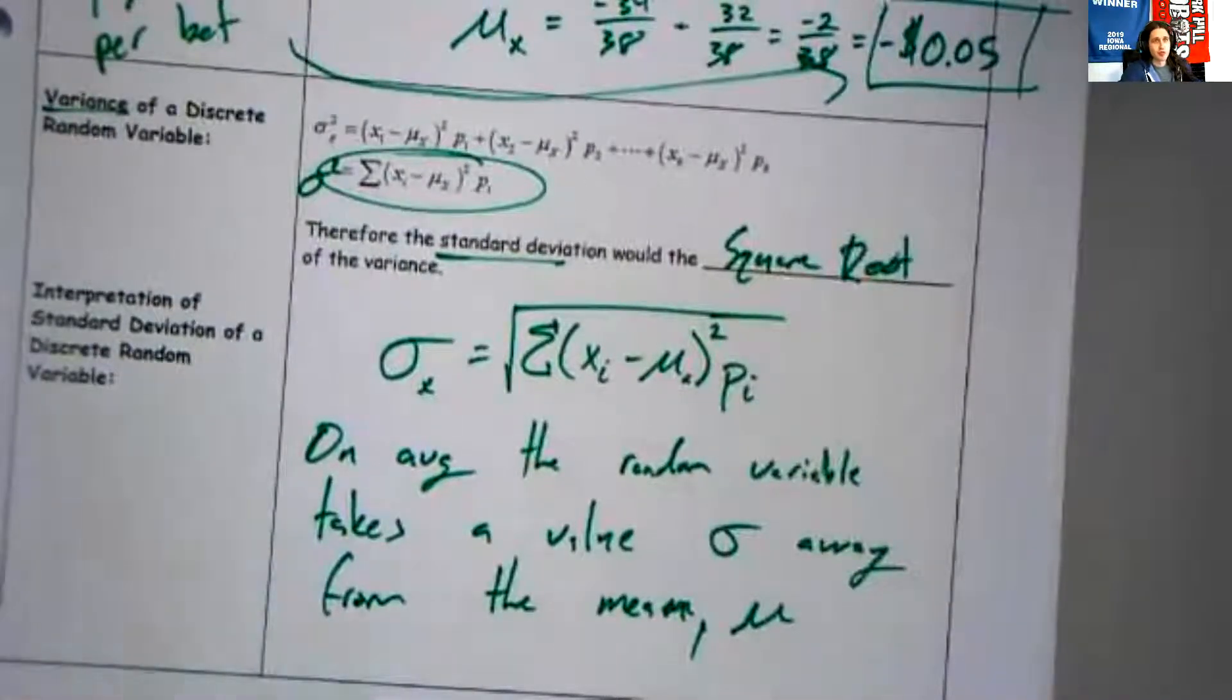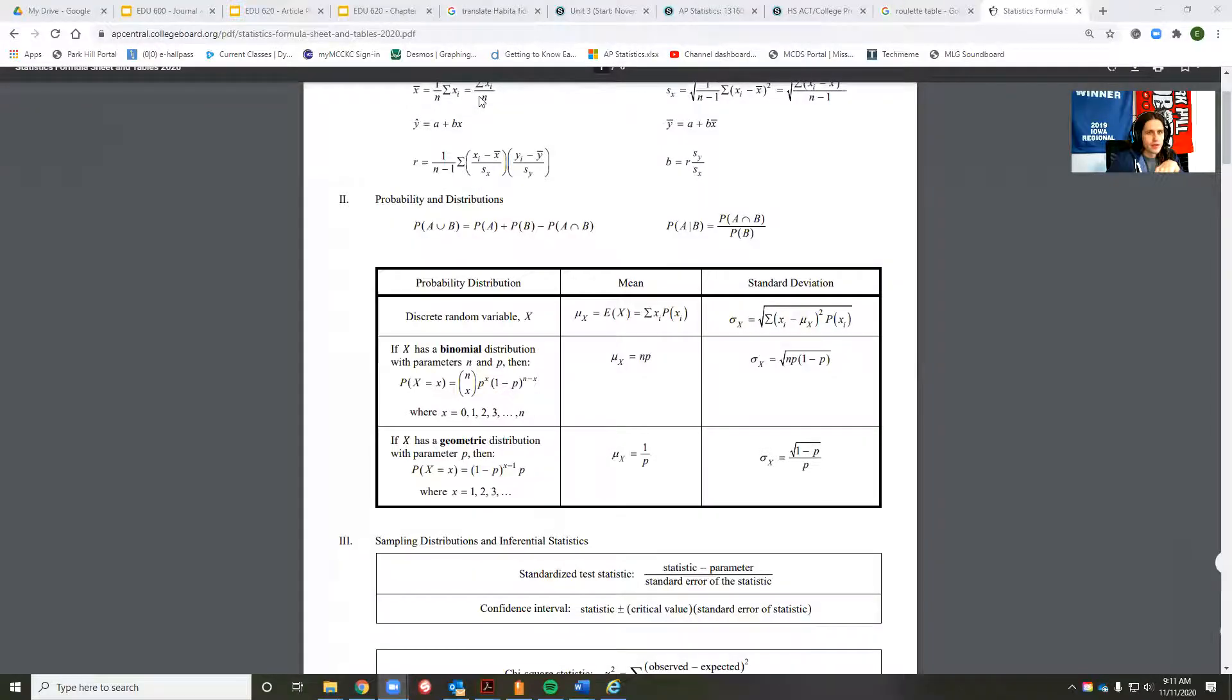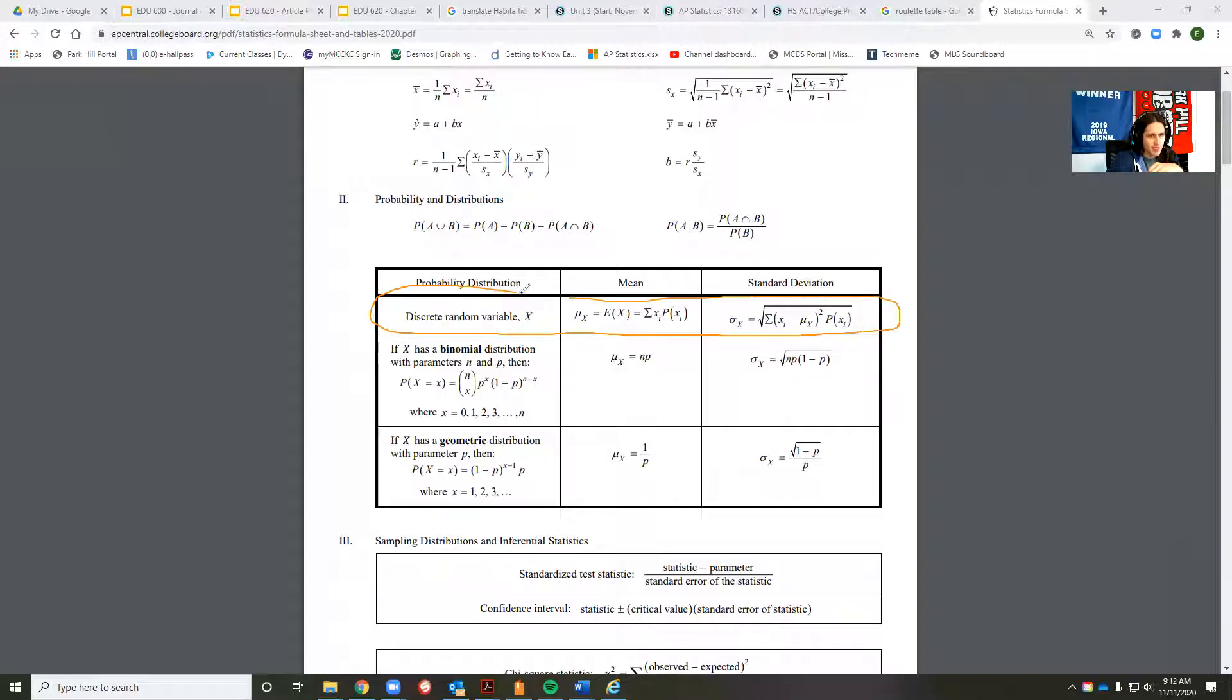Let's take a moment to flip over to the formula sheet and find it. Looking at your formula sheet, we are in probability and distributions. We are down here discrete random variable X. There is your formula for both the mean and the standard deviation of a discrete random variable X.